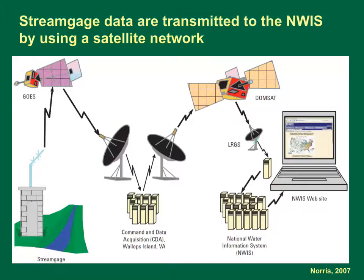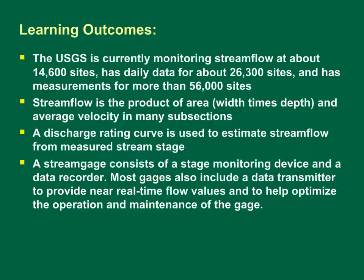This schematic diagram shows the satellite links from the gauging station to the online NWIS web servers and our computers. Final data are checked and verified, but provisional data are provided in near real time. We use the approved record to calculate streamflow statistics for use with SELDOM. In this module, we learned that the USGS is currently monitoring streamflow at about 14,600 sites known as stream gauges, has daily data for about 26,300 sites, and has individual streamflow measurements for more than 56,000 sites. Streamflow is the product of area (width times depth) and average velocity in many subsections. A discharge rating curve is used to estimate streamflow for measured stream stage. A stream gauge consists of a stage monitoring device and data recorder. Most gauges also include a data transmitter to provide near real-time flow values and to help optimize the operation and maintenance of the gauge.